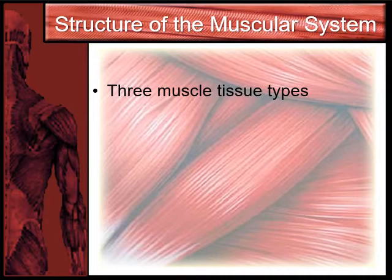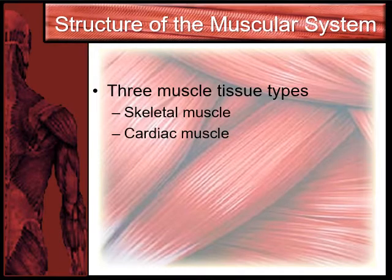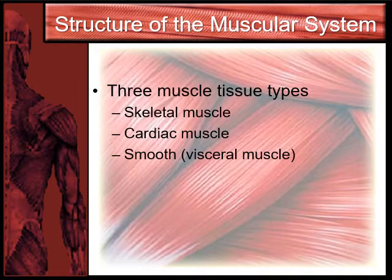Not all muscles in the body are the same. First we have skeletal muscle, cardiac muscle, and then smooth muscle, which is also called visceral muscle. Visceral means pertaining to the internal organs, so you're going to find these muscles in your internal organs.